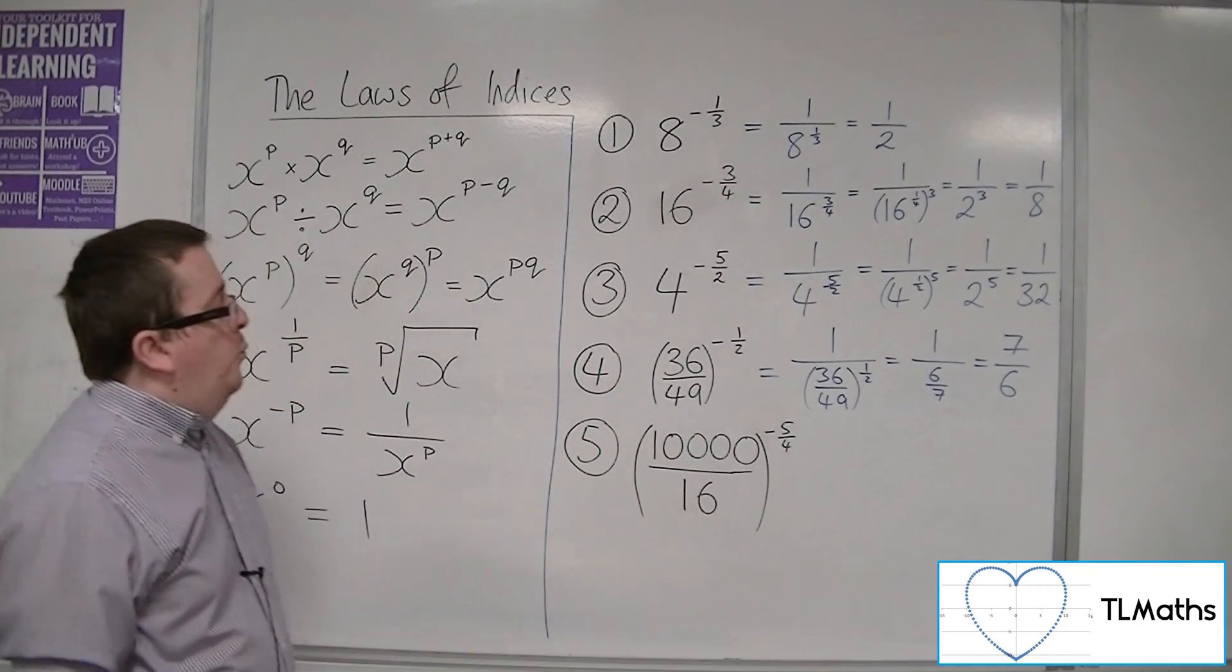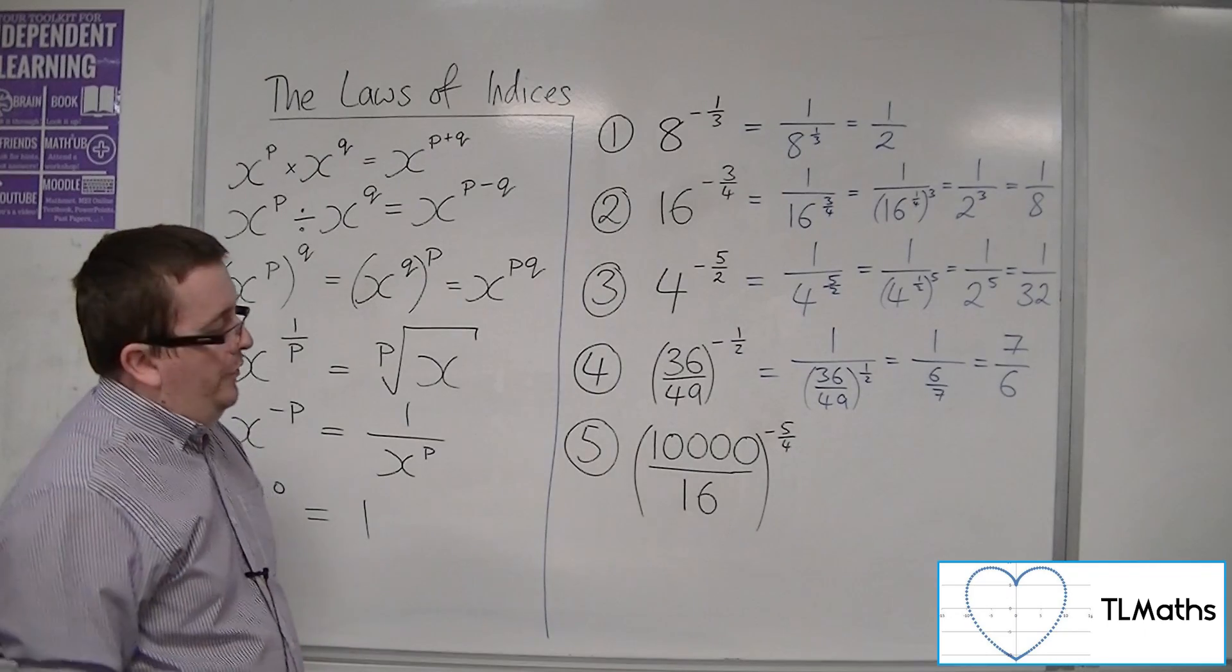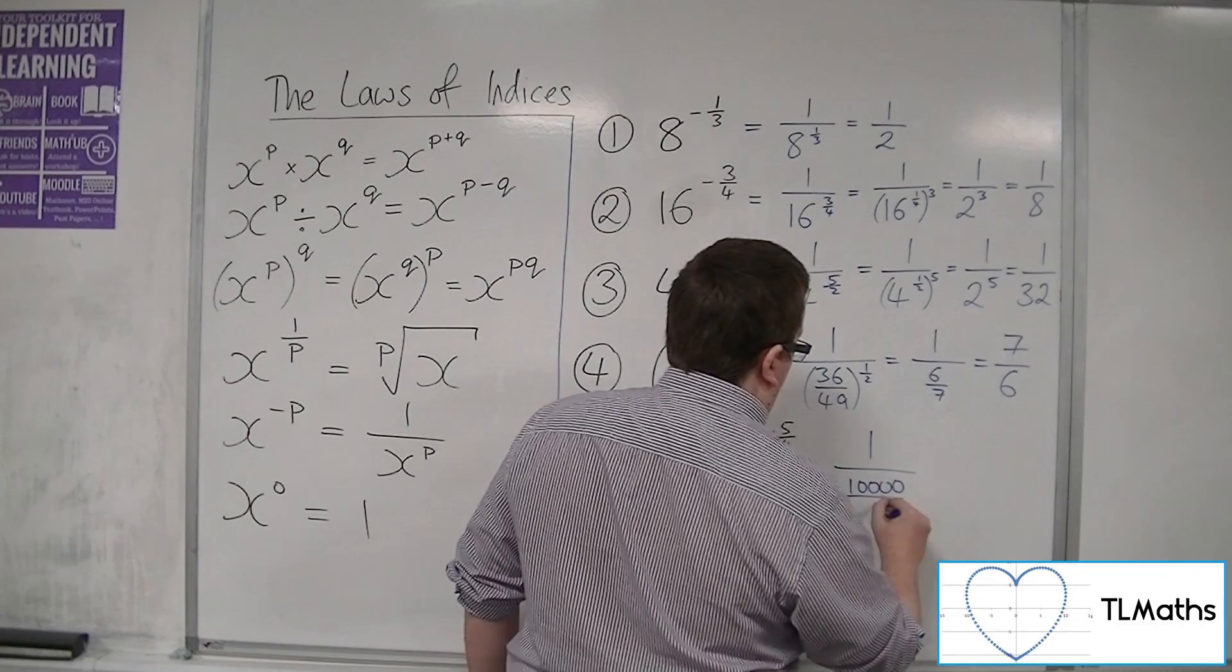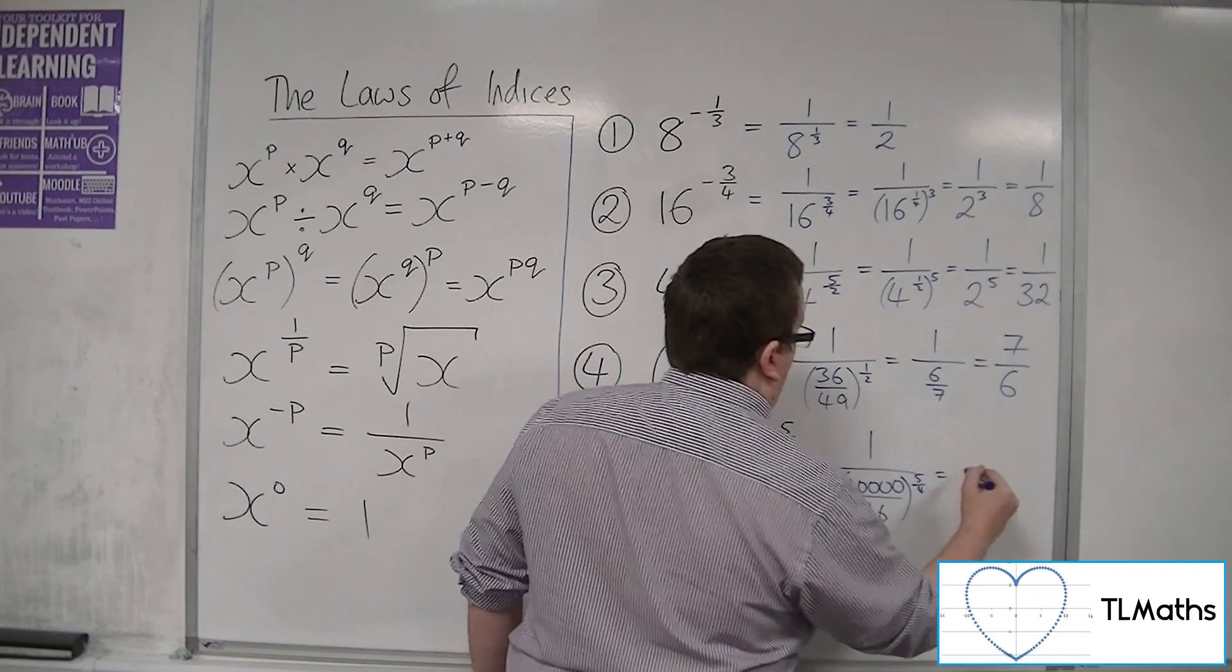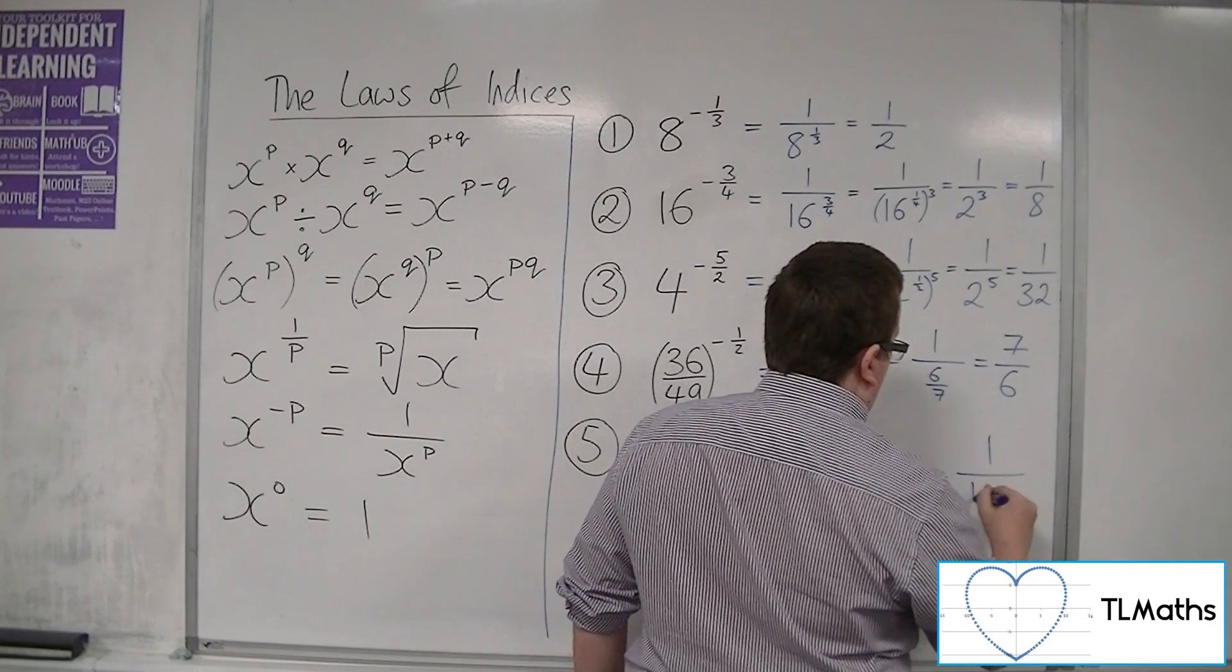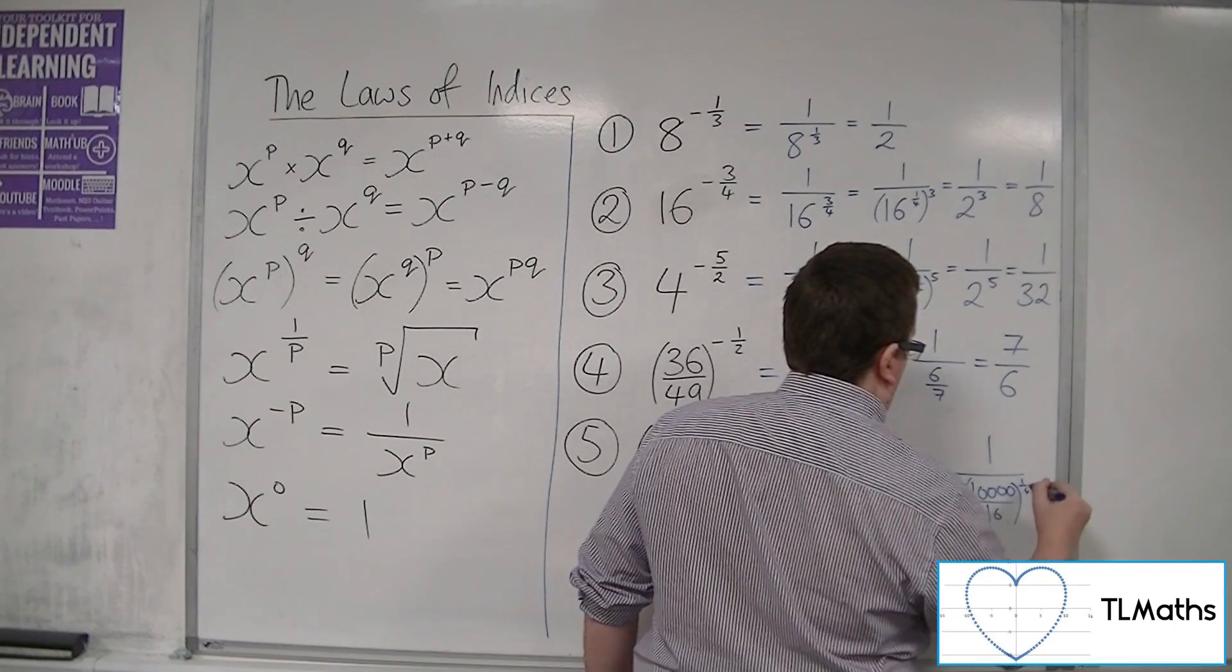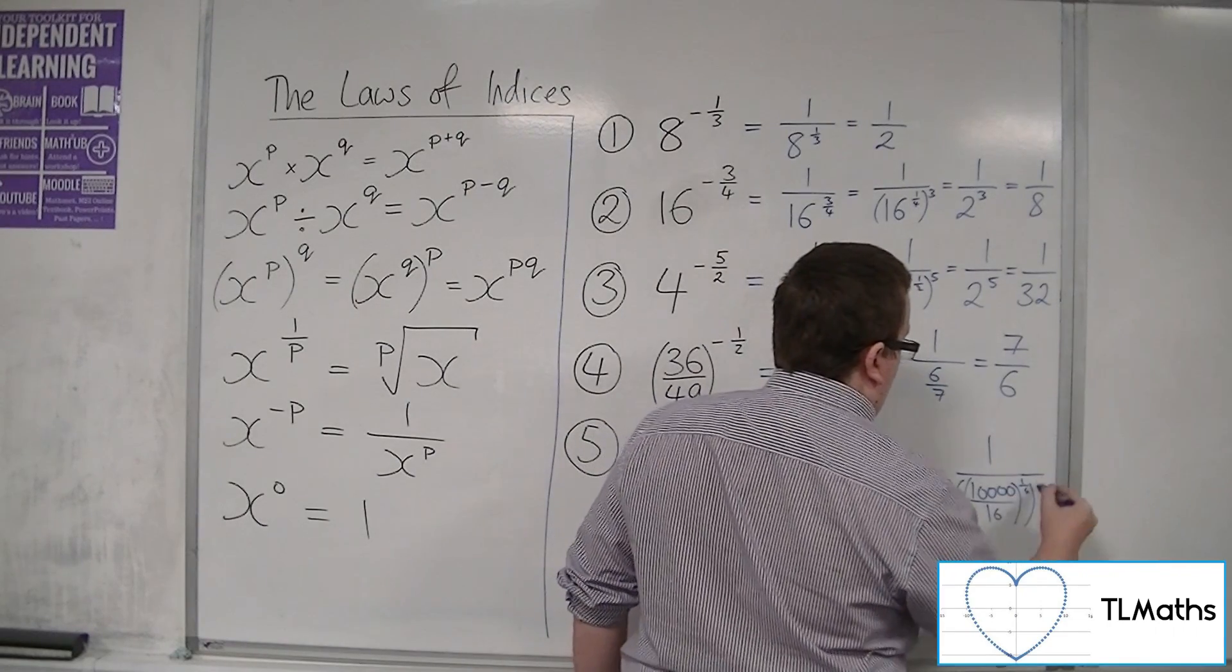Then finally we've got 10,000 over 16 to the minus 5 quarters. So that's 1 over 10,000 over 16 to the 5 quarters. We want to deal with the root first. So that's 1 over the fourth root of 10,000 over 16 to the power of 5.